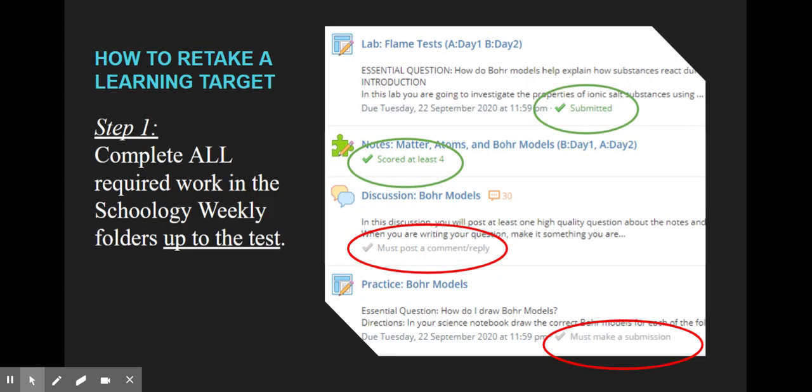So how do you retake a learning target? Let's take a look at some of the steps. The first step is that you must complete all of your required work in Schoology in the weekly folders up to the unit test. So if you go find that test that those targets were assessed on and look at all the previous materials, everything needs to be complete for that unit. You know it's complete if you look at the little student completion rules—they'll say submitted with a little green check mark, or if they don't, then you know you didn't complete those things. Now just because you complete them doesn't mean that they were done well. You should also consider going back to materials making sure that they were done well and review those materials.